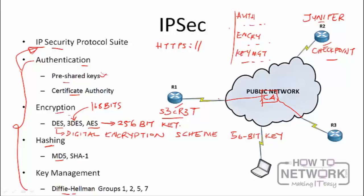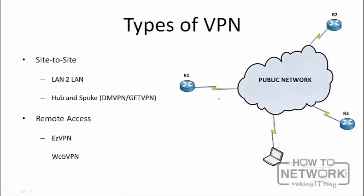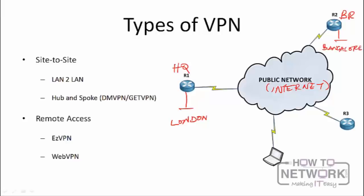There are two kinds of VPNs: site-to-site and remote access. In a site-to-site VPN, the tunnel is formed between two devices — for example, a headquarters network behind R1 and a branch network behind R2. Instead of building a dedicated WAN link between, say, London and Bangalore, both sites simply use their existing internet connectivity. We build a VPN tunnel over the internet to transport the private network traffic.